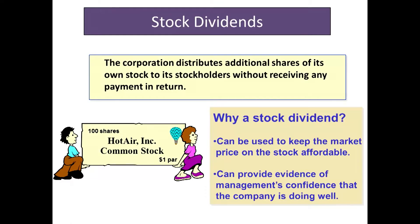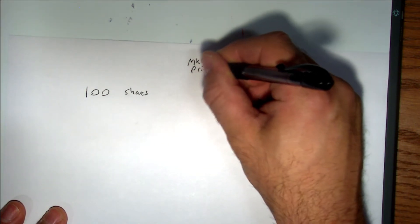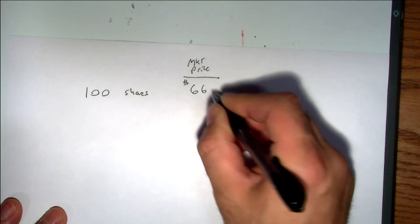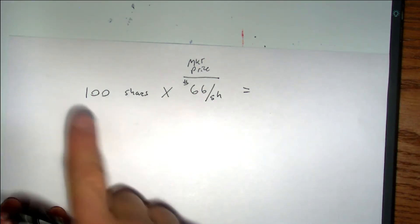Let's concentrate on that first reason — it can be used to keep the market price on the stock affordable. Let me give you an example. Daniel, let's say you personally own 100 shares of stock, and the market price out there — which is determined by supply and demand — is currently $66 a share. So you have 100 shares at $66 per share. What is your total portfolio worth? $6,600.